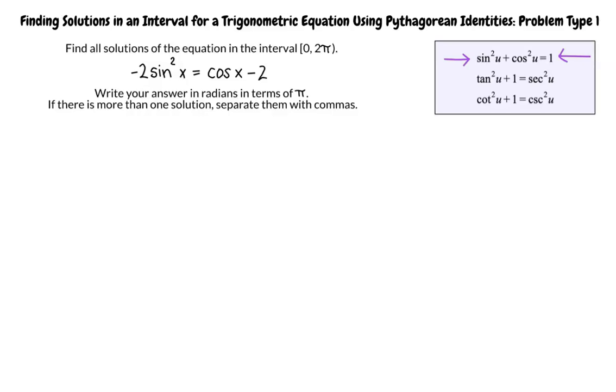Yes, that's the correct identity to use for this problem. We want to be able to make a substitution for sin²x. Can you solve this identity for sin²x? Yes. Subtracting cos²u from both sides of the equation, I get sin²u = 1 - cos²u.